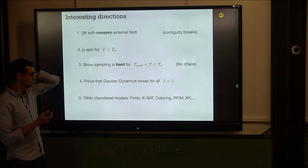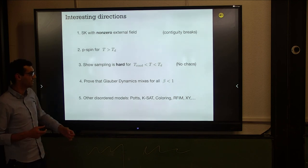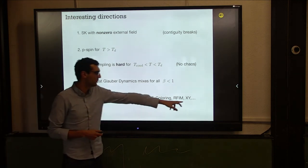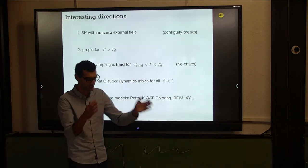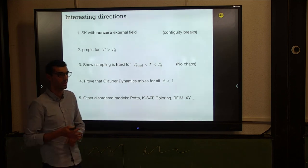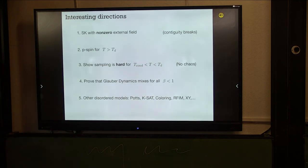Finally, I'd like to consider other disordered models not of the SK form. For instance, the last two models are in finite dimensions, where other phenomena happen. Thank you.